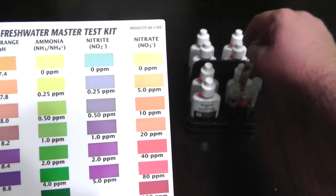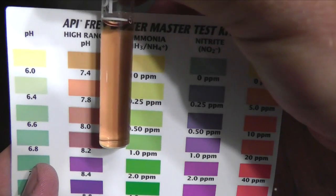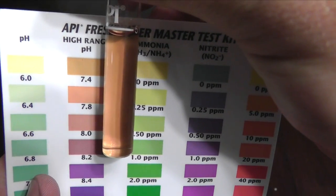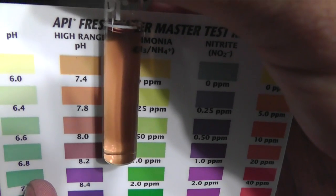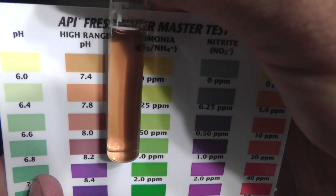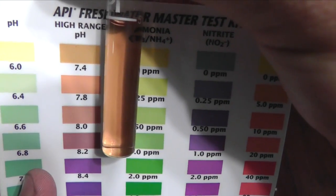This is my pH test, my high range pH test. My high range pH runs around 7.4, maybe 7.8. But see, that's still good. It's not in the acidic level. It's not in the alkaline level too high. So you're good there.